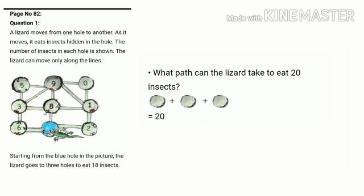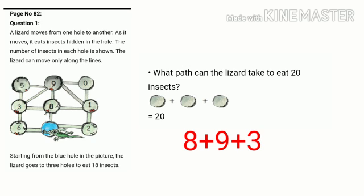Now the next question: what path can the lizard take to eat 20 insects? We have 3 holes. So which path will it take? It will start from 8, then go to 9 and 3. So 8 plus 9 plus 3 equals 20.